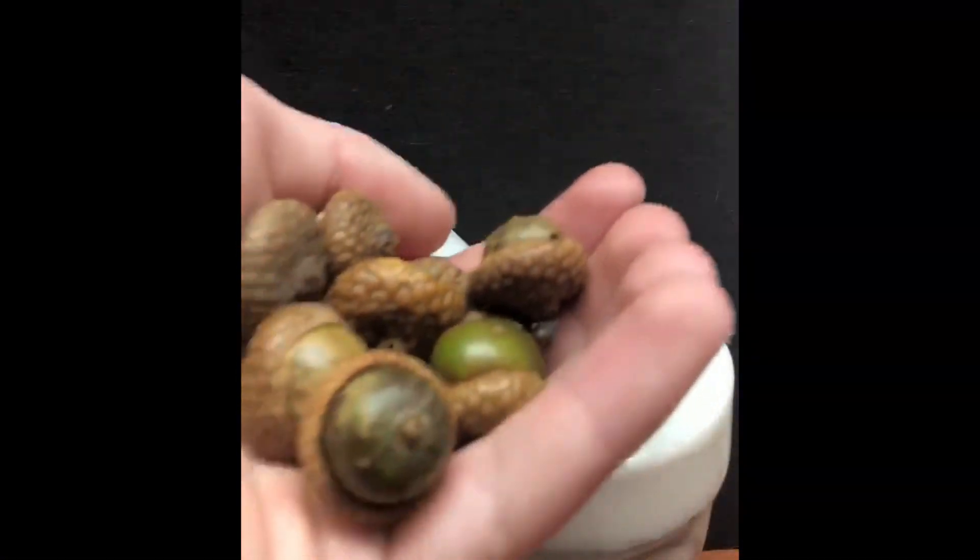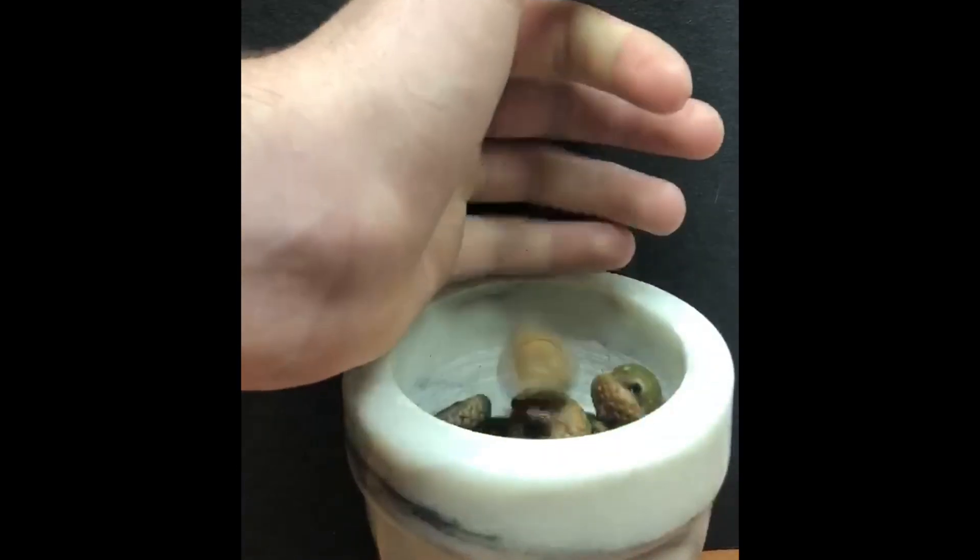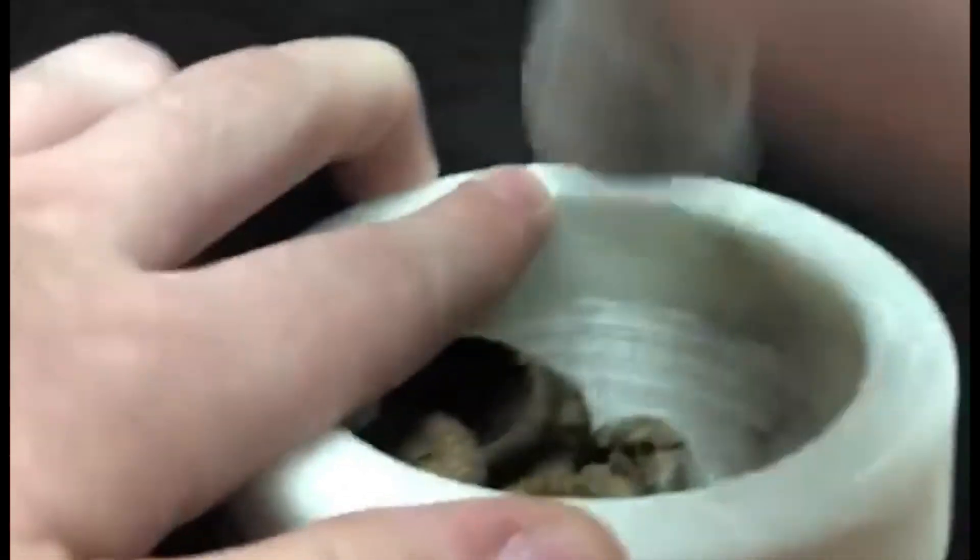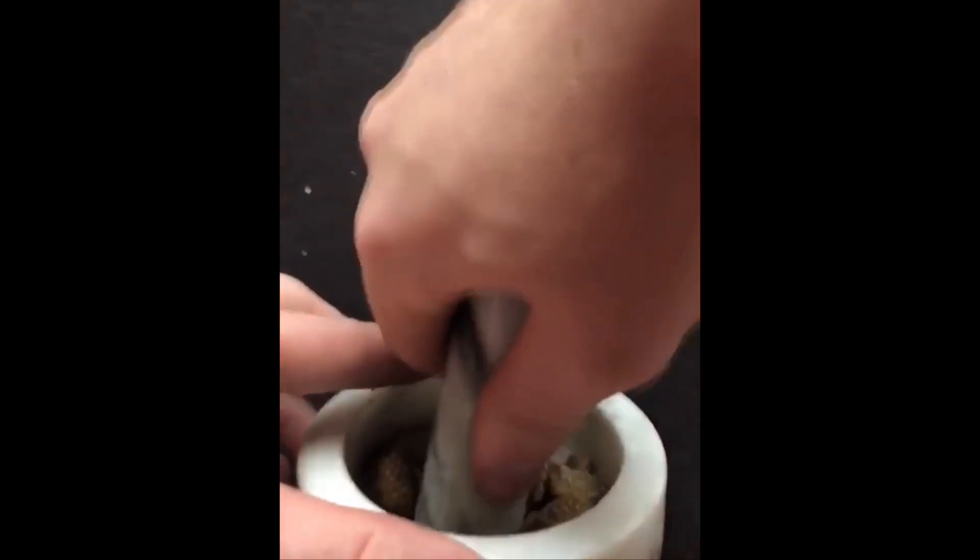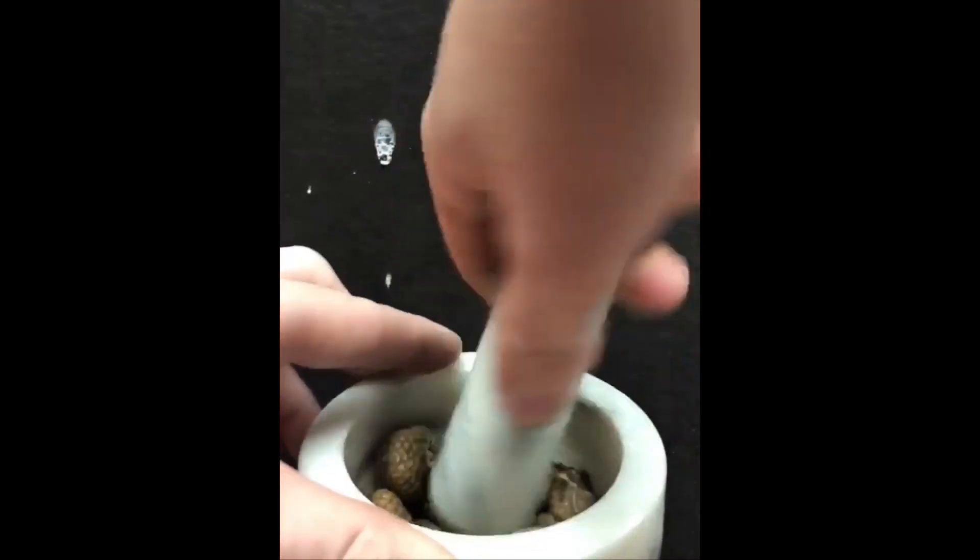Firstly, I will be grinding up acorns. Oak galls would work way better, but I'm geographically limited and they simply just don't exist where I live. But acorns contain a high level of tannins, so therefore they should work for the synthesis.